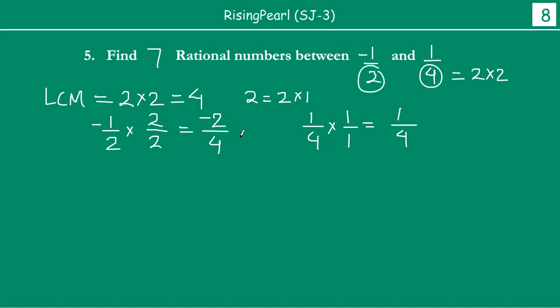You have got these new fractions: -2/4 and 1/4. Now the denominators are 4 and 4, the same. Now we can go ahead and apply the two-step technique. The first step is how many rational numbers do we need to find? 7. So we write 7, add 1 to it, so 7 plus 1 is 8.